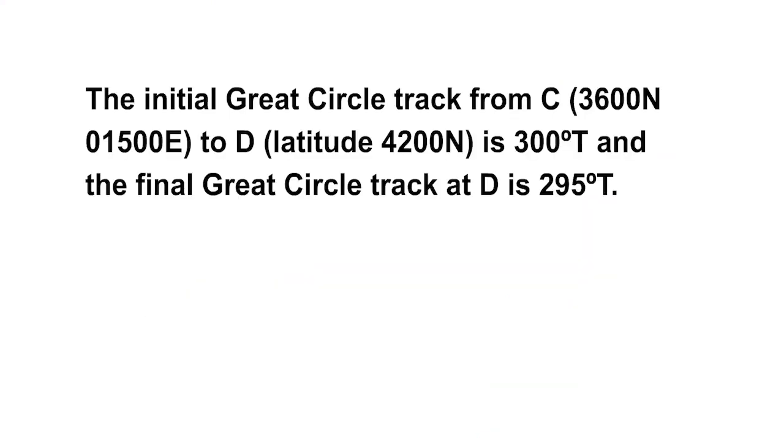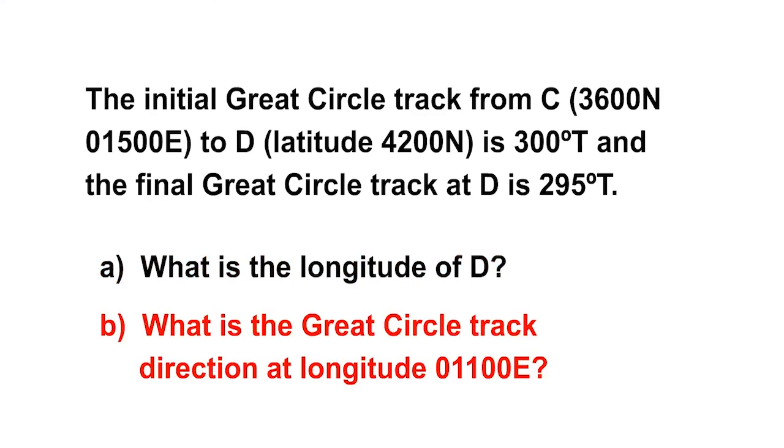Here's another practical example. The initial great circle track from C which is at 36 north 15 east to D which is at latitude 42 north is 300 degrees true and the final great circle track is 295 degrees true. Firstly, what is the longitude of D? Secondly, what is the great circle track direction at longitude 11 degrees east?